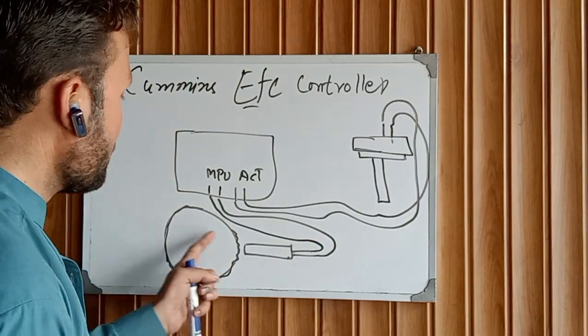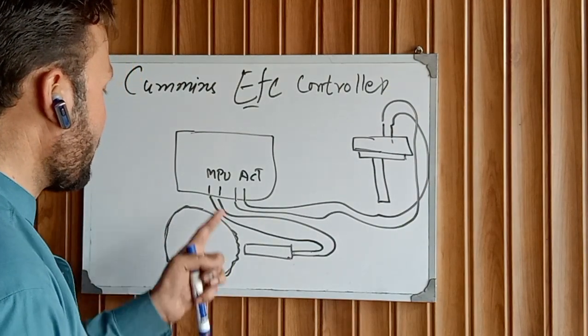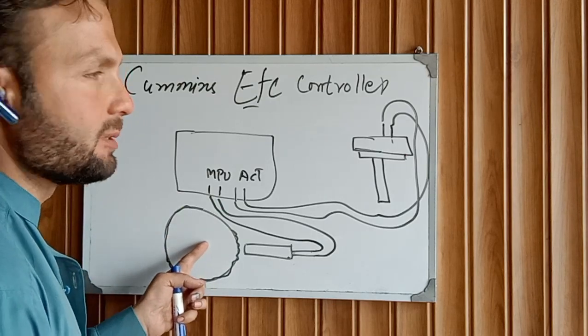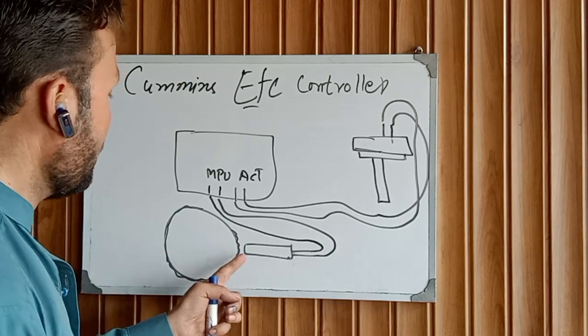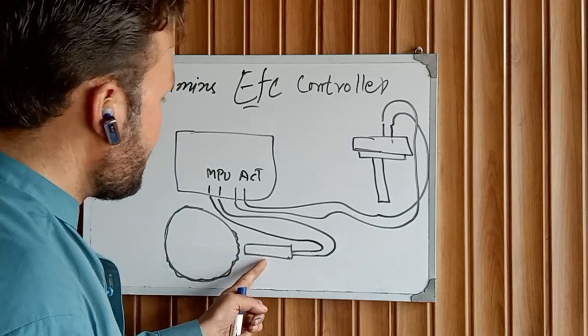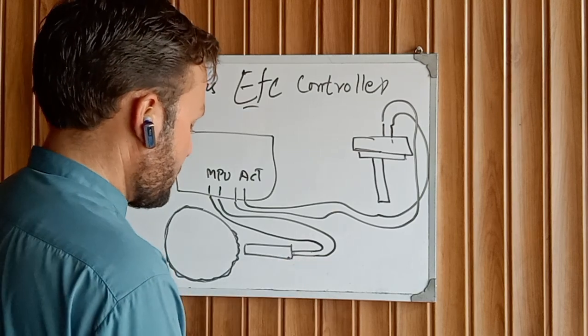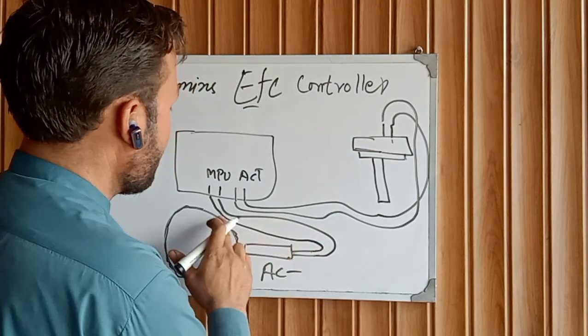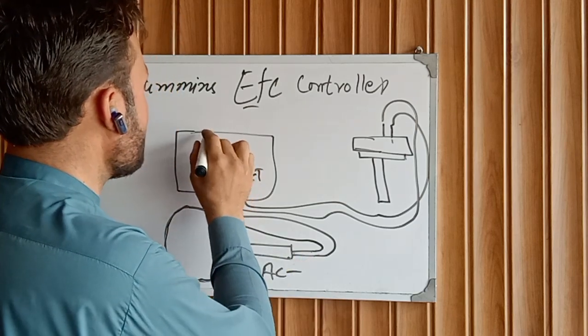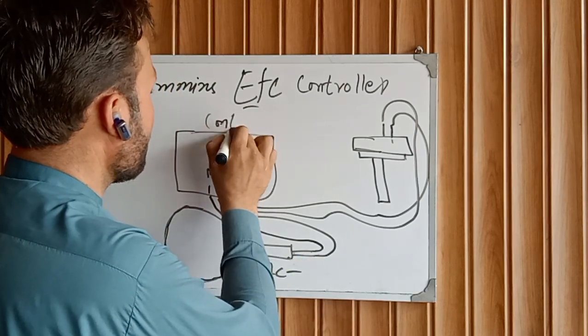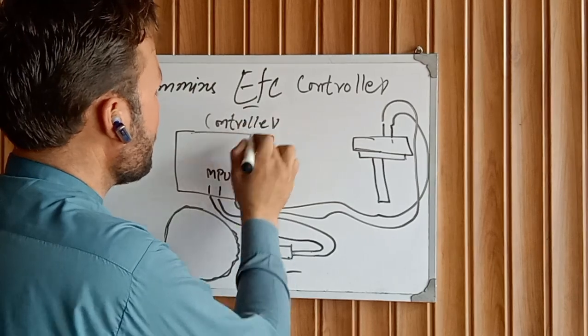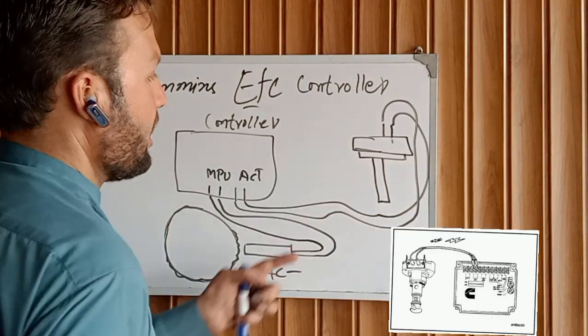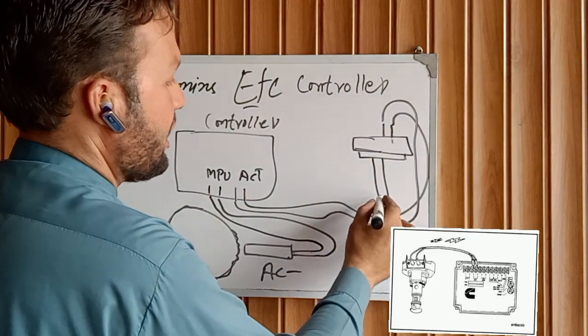When we crank the engine, the engine crankshaft rotates, and the flywheel also rotates with the crankshaft because the flywheel is mounted on the crankshaft. Now this small sensor, the MPU, generates AC voltages. This is sending AC voltage to this controller.